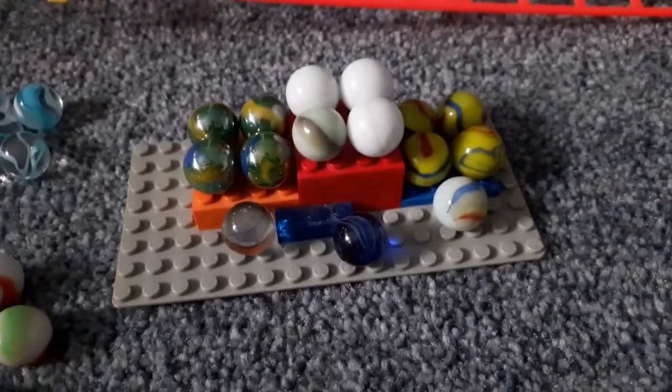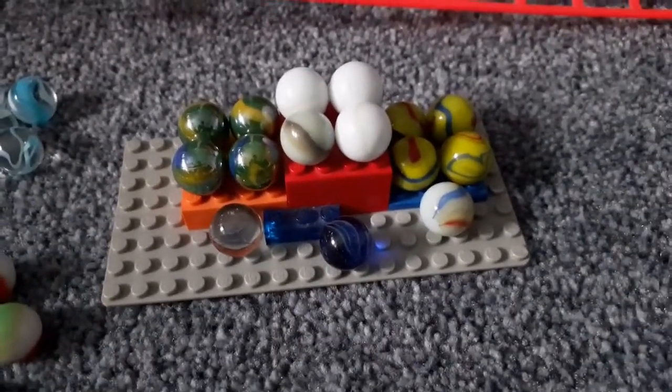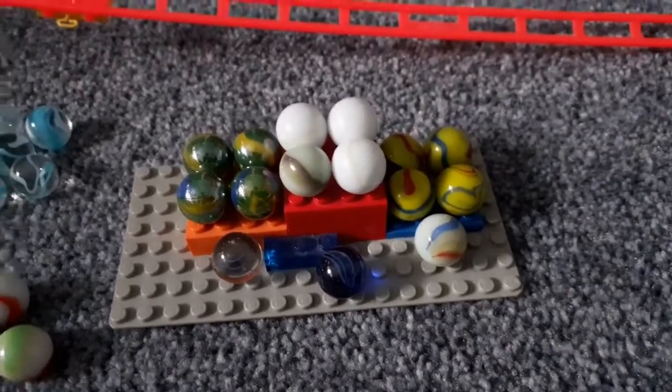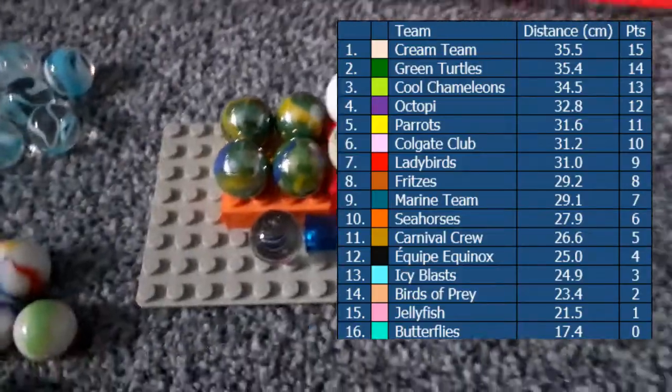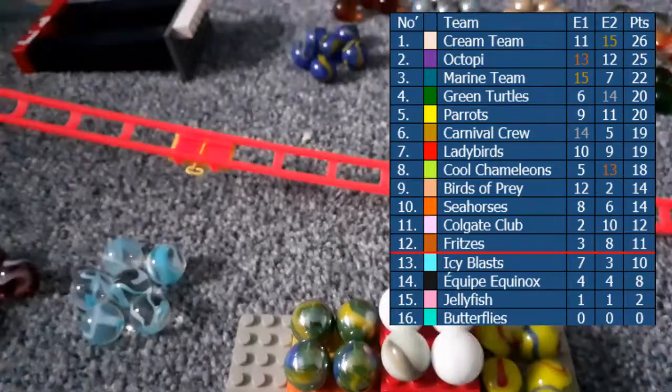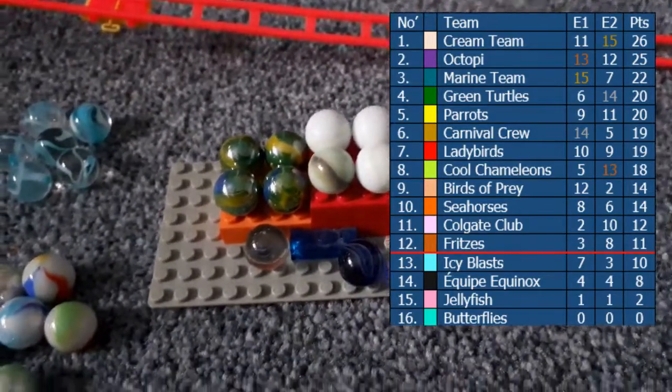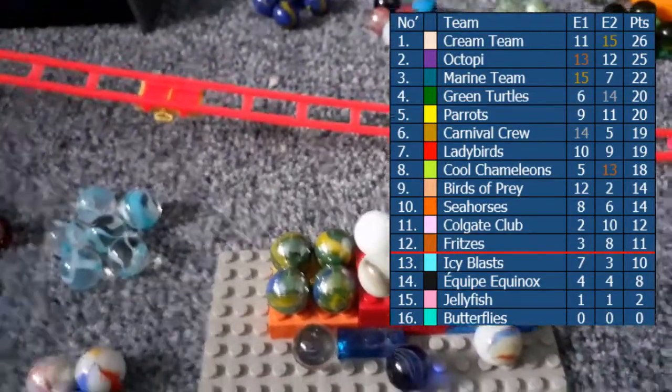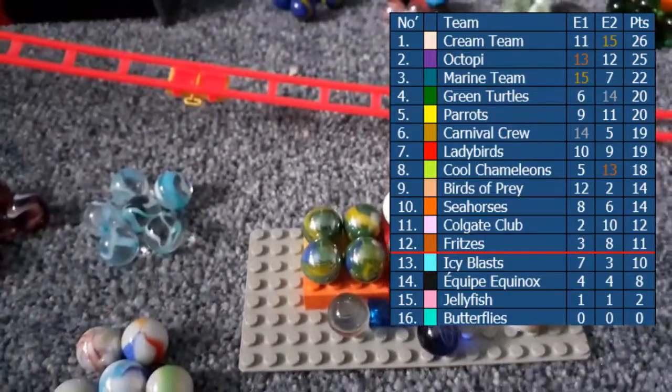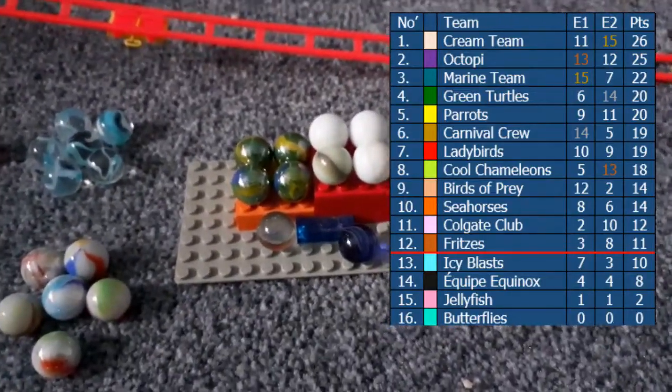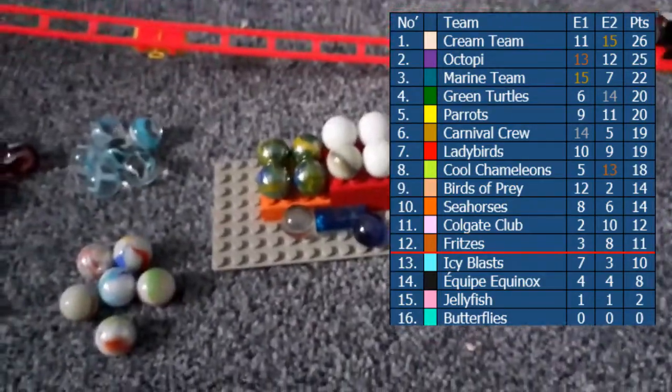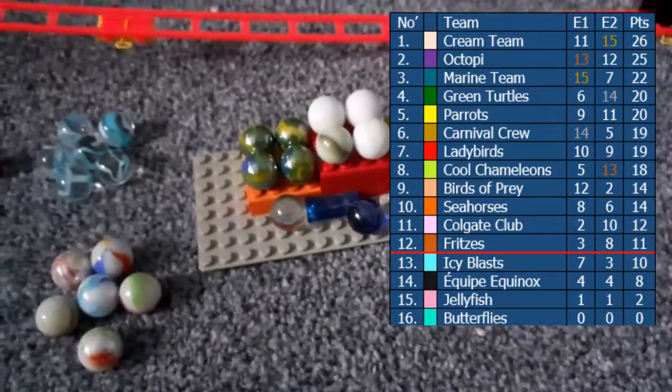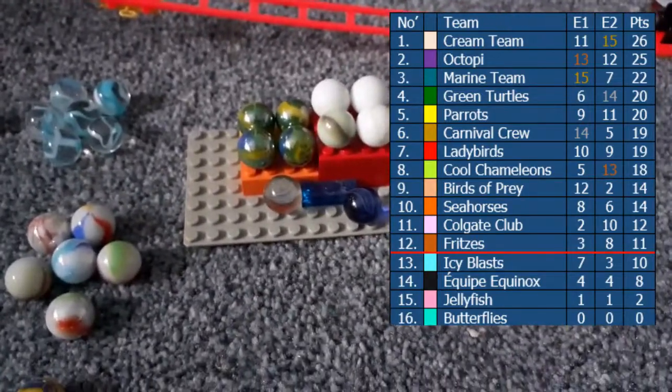And so, Cream Team win Block Pushing. But Green Turtles, second, and in third, are the Cool Chameleons. Let's look at how these teams are in the standings. And looking at those then. Of course, you can see, it is the Cream Team now taking the qualifiers lead. Octopi, Chameleons, then Marine Team. Then Parrots, Green Turtles, Carnival Crew. They're currently in the relegation zone. Icy Blast, Equipe Equinox, Jellyfish, and Butterflies. Jellyfish and Butterflies in the bottom, being 15th and 16th respectively in both of the first two events. Not a good start for either of those teams there. Really bad news. Anyways, Equipe Equinox and Icy Blast, they're still very much in contention. I think Birds of Prey down, really, are particularly at risk. But with two events still to go, Swimming and Rummerees, anything can still happen.